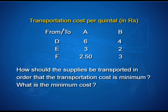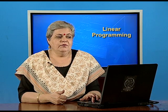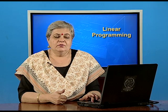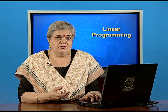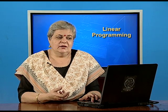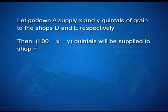The problem is to find how we should transport these supplies so that the transportation cost is minimum, and also to find what the minimum cost is. We start by identifying the decision variables — what we assume as x and y. Let us assume that from godown A, we supply x quintals to shop D and y quintals to shop E. Therefore, shop F gets what is left with A, that is 100 minus x minus y quintals.